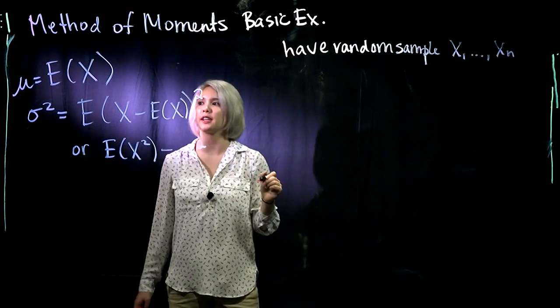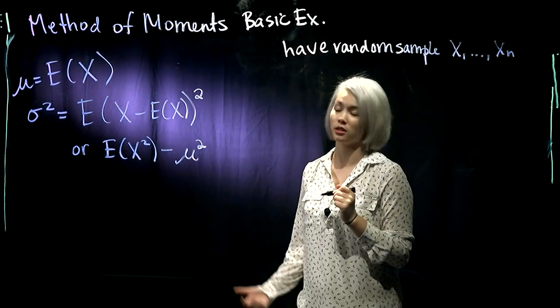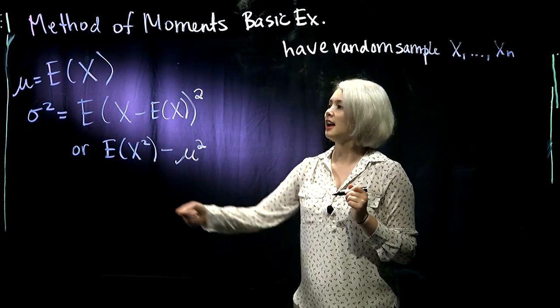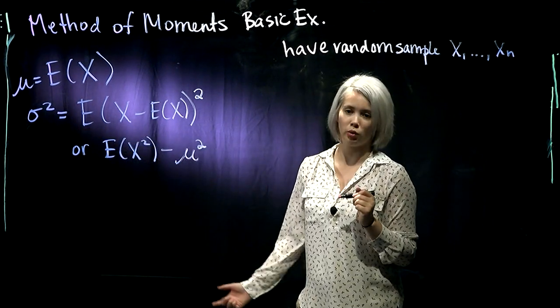So we have our random sample of size n. And we're looking for the mean, μ, which is, of course, the expectation of X. And then we're looking for the variance, σ².